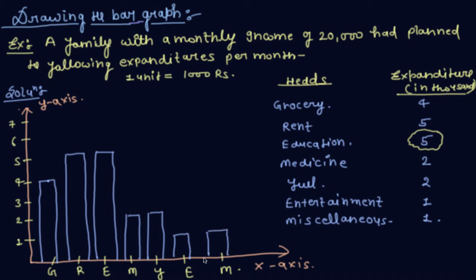So this is the bar graph of expenditures of different types under each head for one month in a family. This serves as a better representation of data than the tabular form.